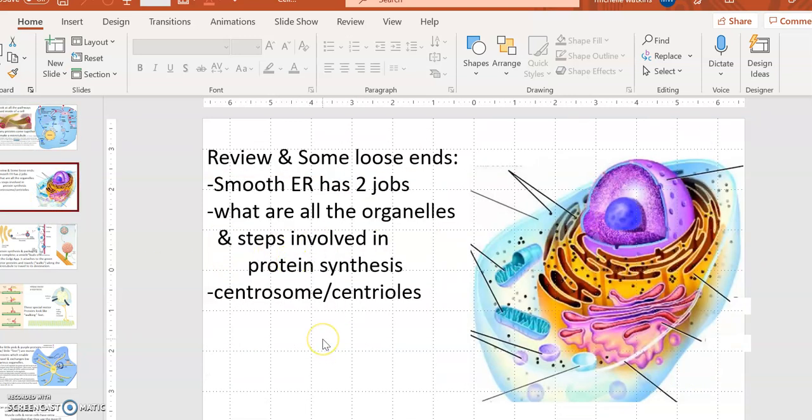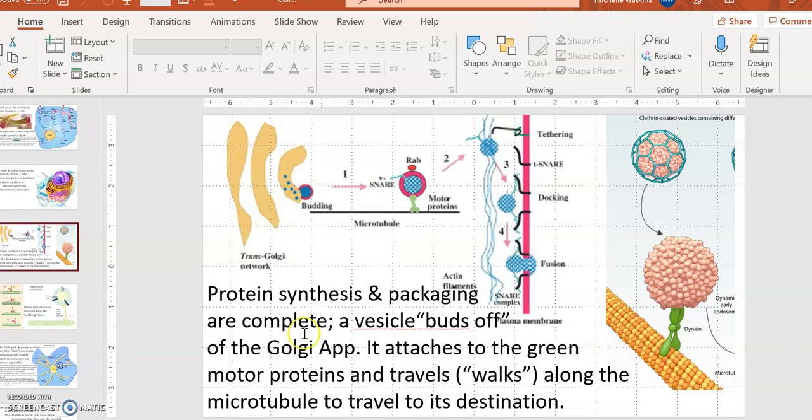This was just a review that we did at the beginning, a warm up. So this is supposed to be the Golgi bodies. I wrote a protein synthesis and packaging are complete inside the Golgi body. So now a vesicle buds off. They changed its color so it now becomes noticeable. It buds off the Golgi apparatus and here is the microtubule so it's going to travel along it.